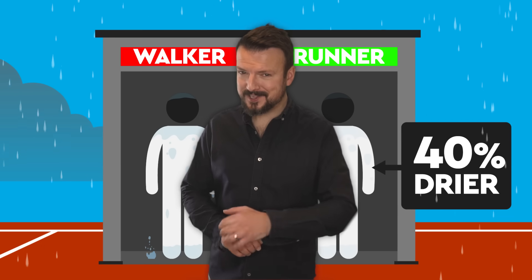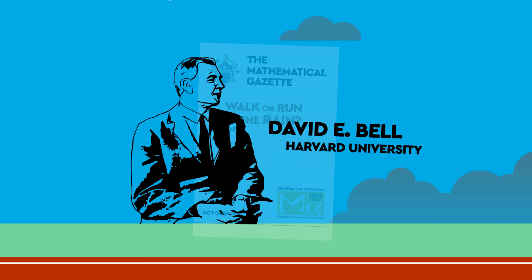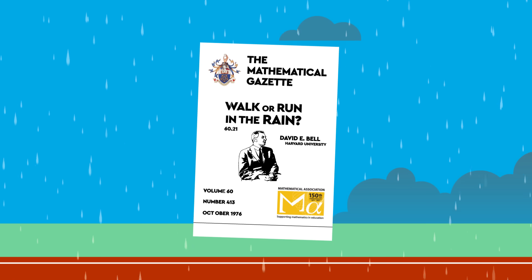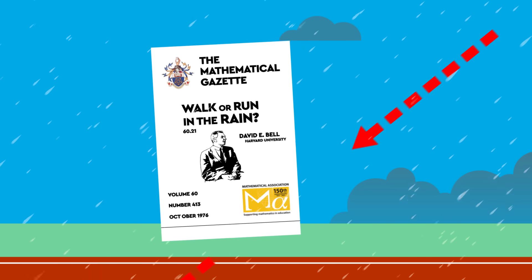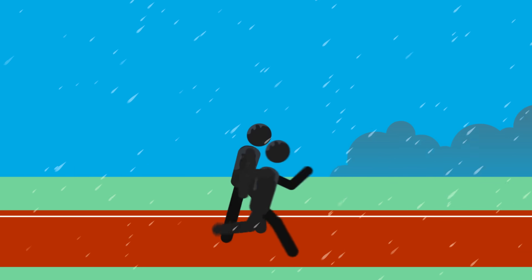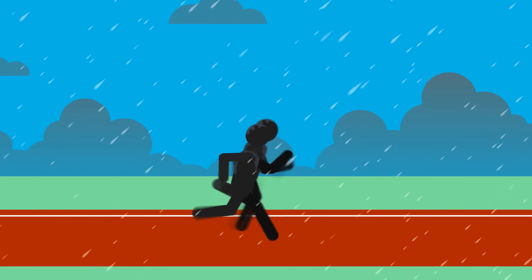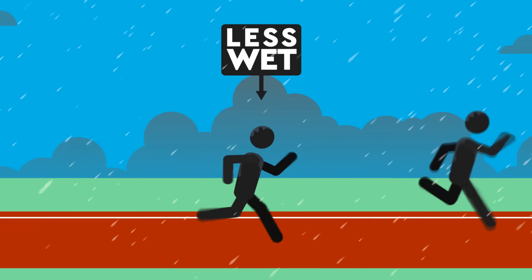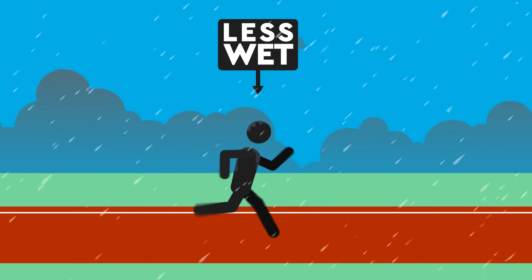But the boffins haven't stopped there. In their voracious quest for knowledge, scientists have also factored in things like wind direction and intensity. For instance, our old pal Bell pointed out in his study that when rain is falling either vertically or the wind is blowing it towards you at an angle, the faster you run, the less wet you will get over the same distance, so theoretically you should try to run as fast as possible.